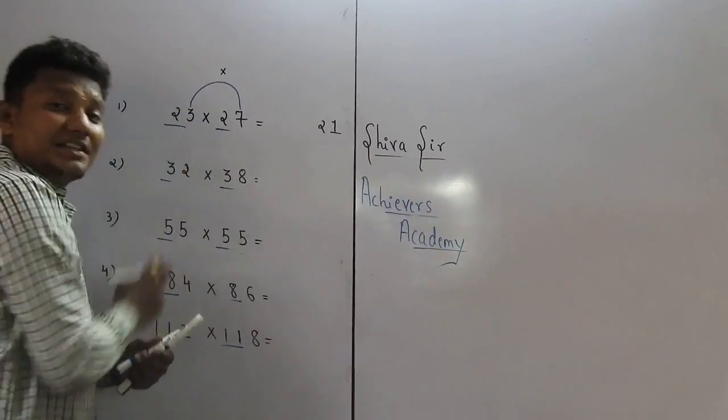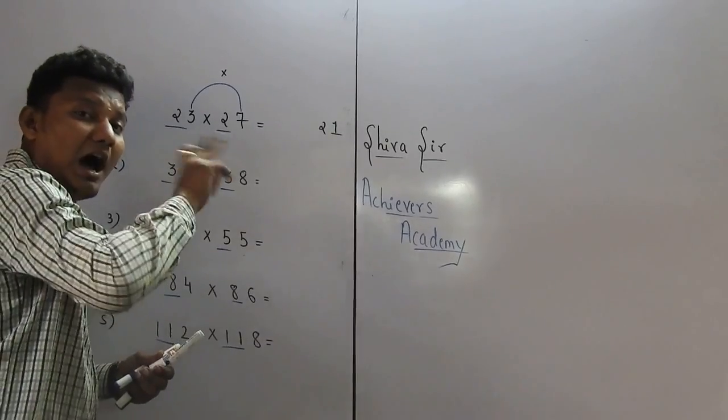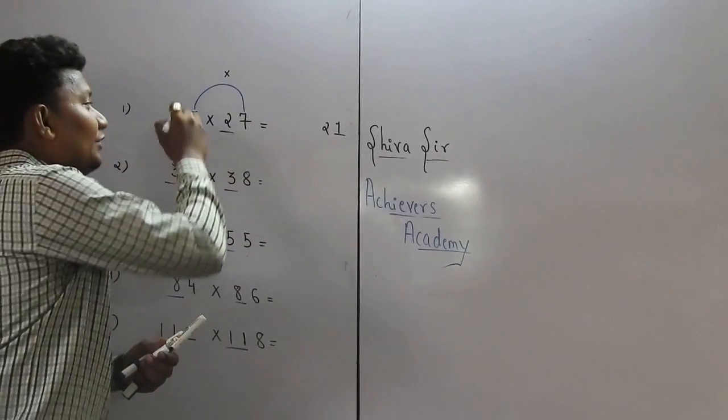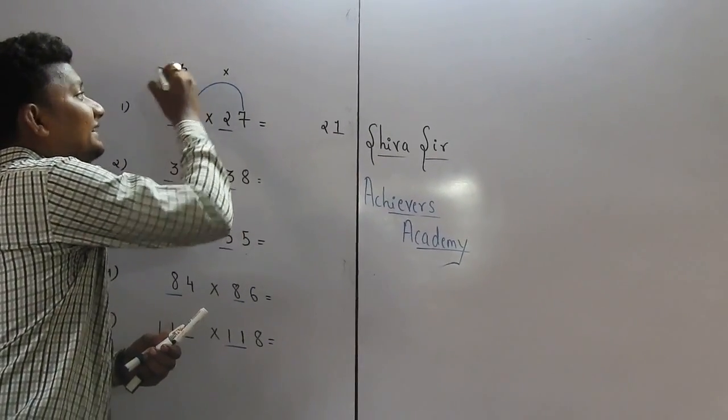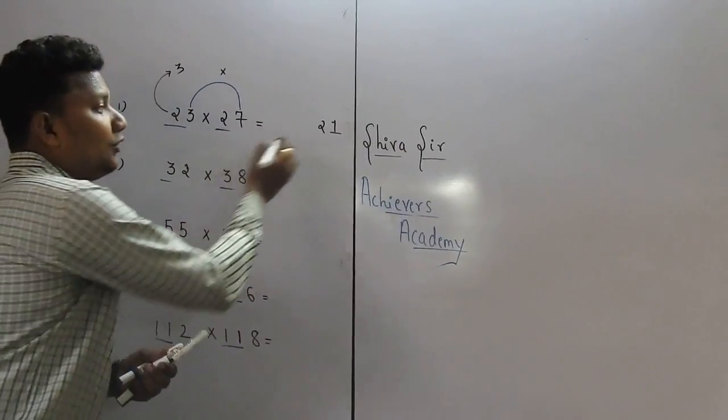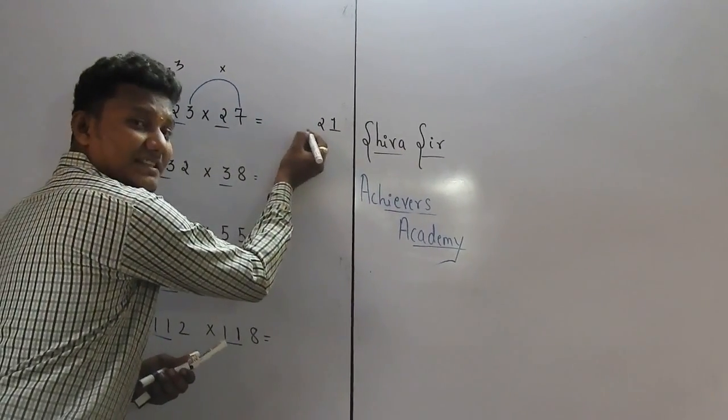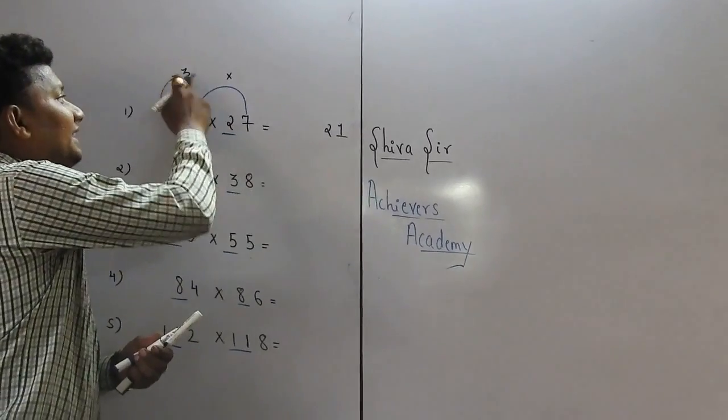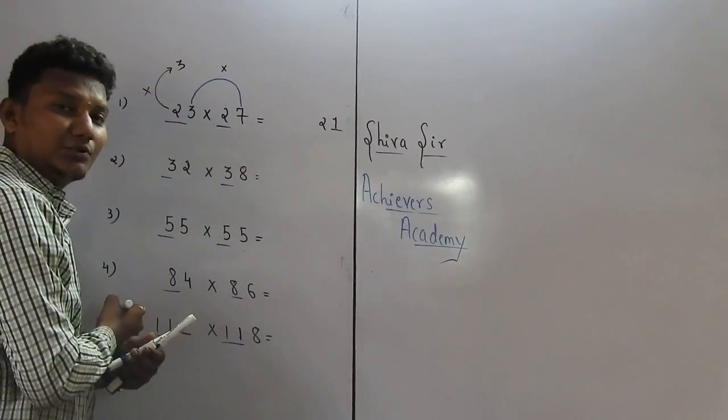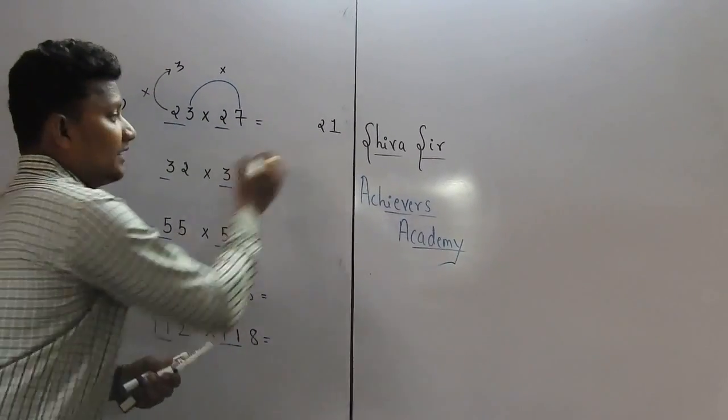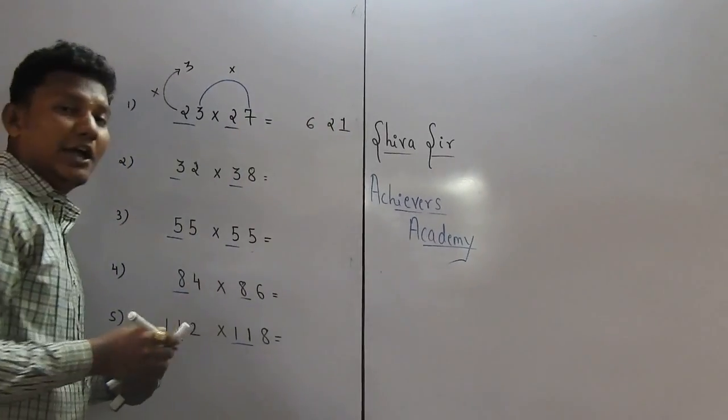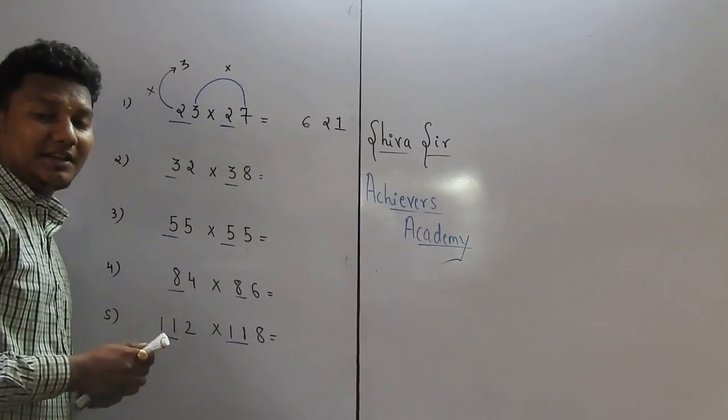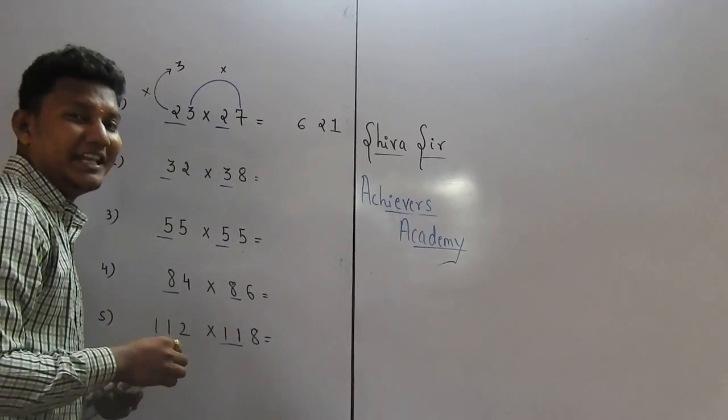Next step. What is the next number after 2? It is 3. So how to find this answer? See, 2 and 3. Multiply 2 and 3. 2 times 3 is equal to 6. So we got the answer: 23 into 27 is equal to 621.